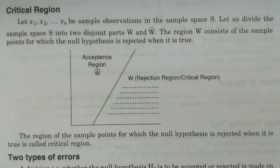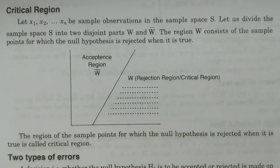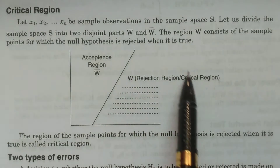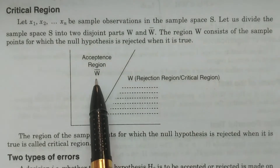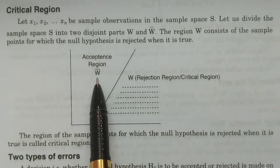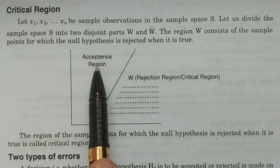For example, consider a manufacturing company producing some number of items. We have taken a sample number of items — for example, 10 items. We are testing one item after another. If the item is defective, it will be rejected. The rejected points fall in a particular region. We frame two regions: W and W complement. The entire sample space is divided into these two disjoint regions — W represents the rejection region and W complement represents the acceptance region.